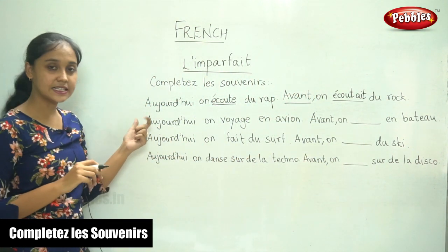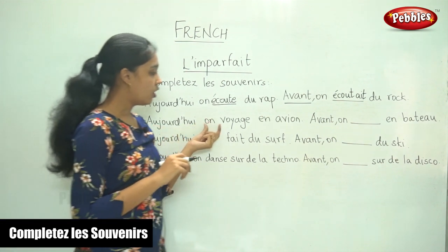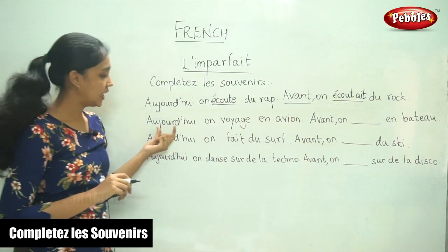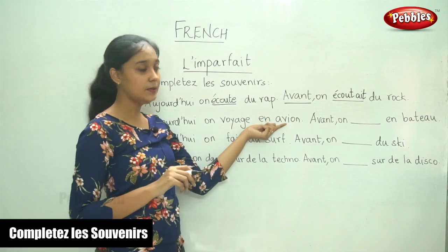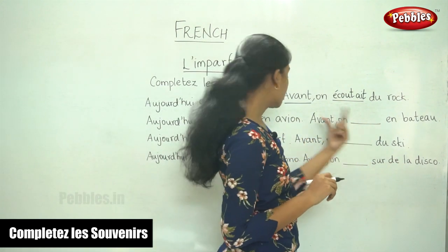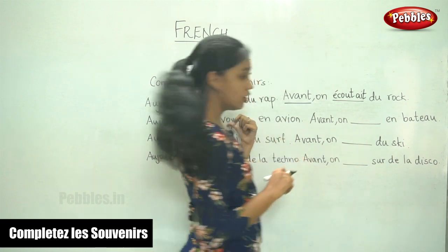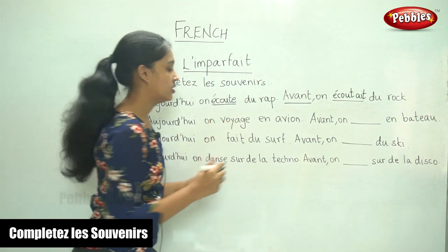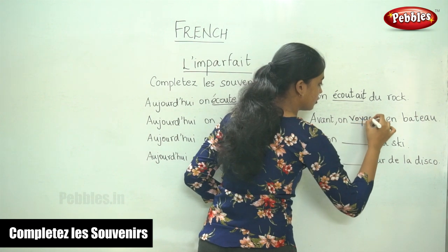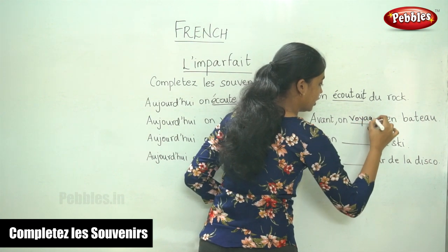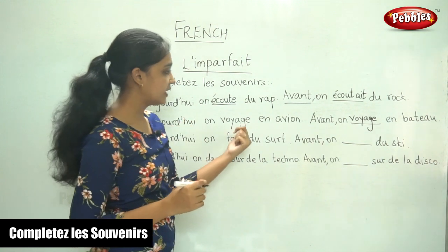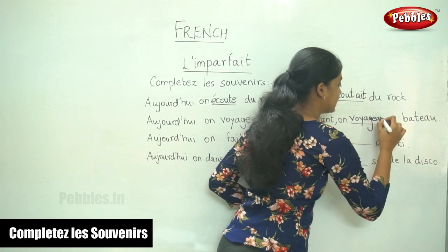The second sentence: aujourd'hui, en voyage, en avion — today one travels by plane. Avant, on — so now, voyager. The imparfait form is 'voyageait,' and the ending is -ait, because the subject is third person singular.